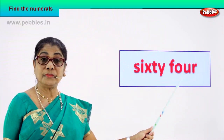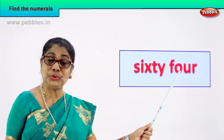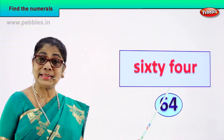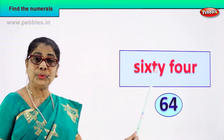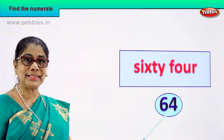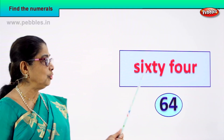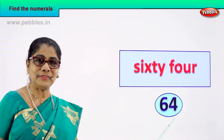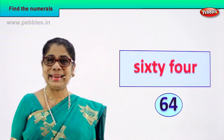Let's take our next number name: S-I-X-T-Y, sixty, F-O-U-R, four — 64. Good. How do we write 64? How do we write the numeral for this name? 6 and 4 — 64. Good. So you found the numeral for this number name: 6 and 4, 64.